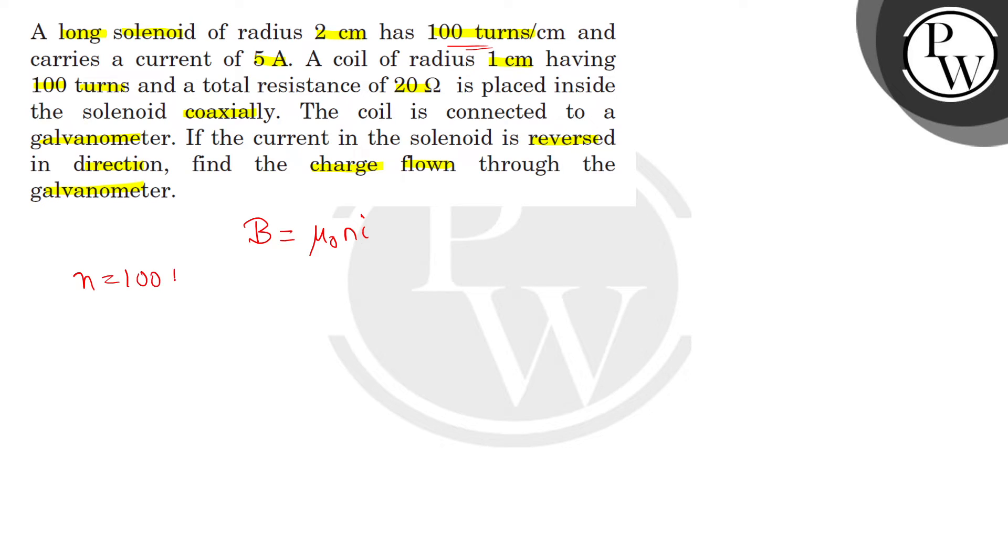n is given as 100 turns per centimeter, that equals 10⁴ turns per meter and i is given as 5 Ampere. So putting the values in B, we get B equals 4π × 10⁻⁷ which is the value of permeability constant and 10⁴ multiplied by 5, that is we get 20π × 10⁻³ which equals 62.8 × 10⁻³ Tesla.